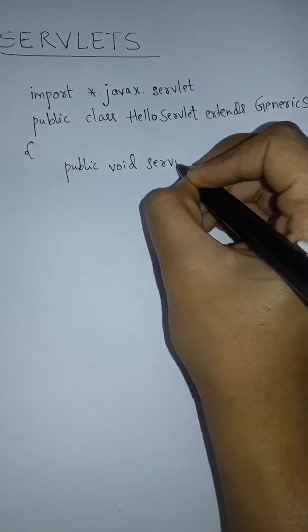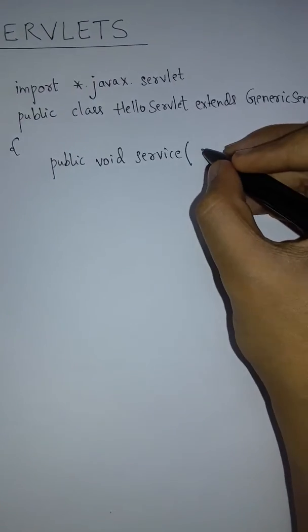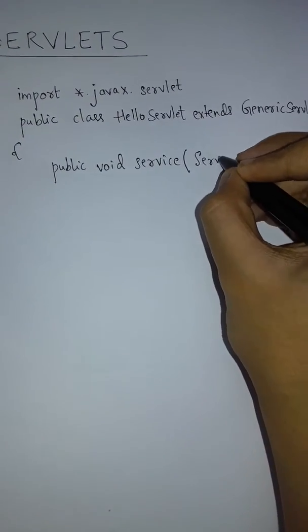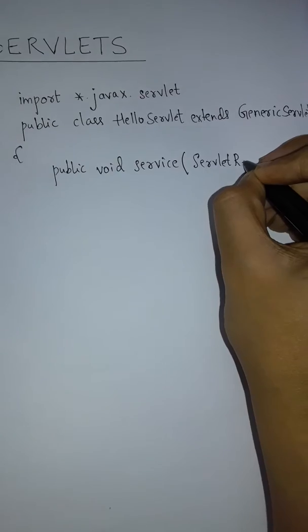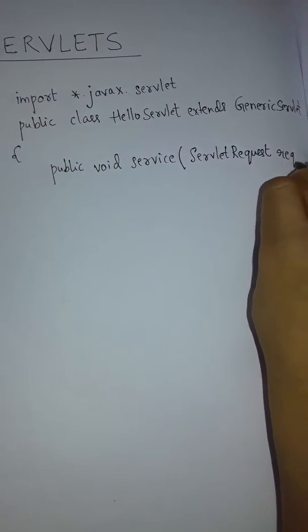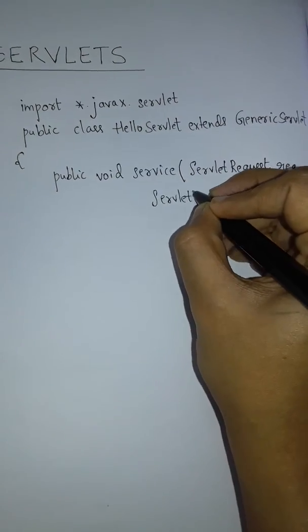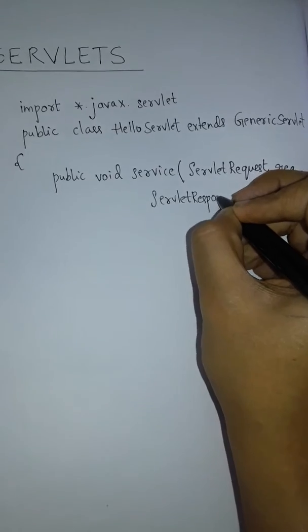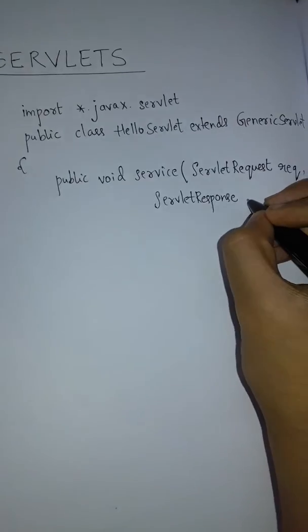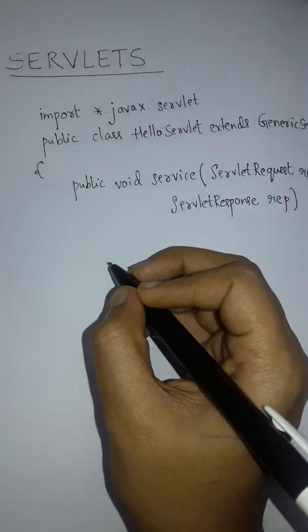So we take down the service method and we pass two parameters inside it. One of them is the ServletRequest and we create an object of this, and another one is the ServletResponse and we create an object of that response also.